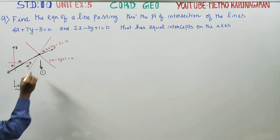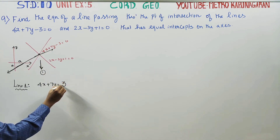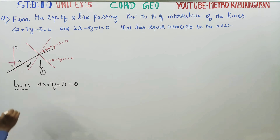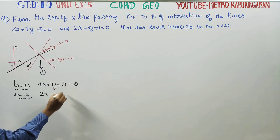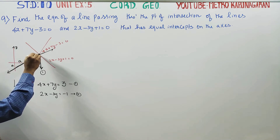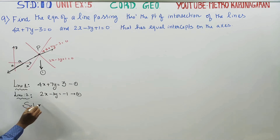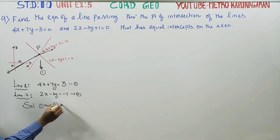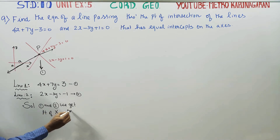Line 1 is 4x plus 7y minus 3 equals 0 — this is equation number 1. Line 2 is 2x minus 3y plus 1 equals 0 — this is equation number 2. The point of intersection is called P. Solving equations 1 and 2 simultaneously, we get the point of intersection P.